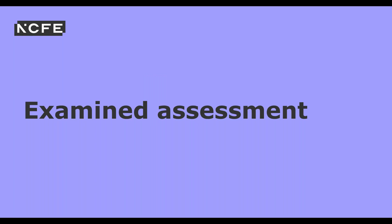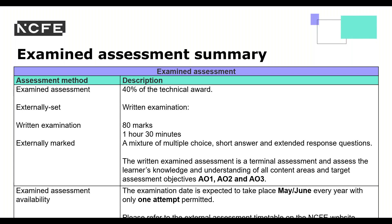There will now be more detail about the exam assessment, including the sample assessment materials that are also available. The EA is 40% of the technical award for graphic design. It is a written examination externally set by NCFE. Learners have 1 hour and 30 minutes to complete it and it is graded out of 80 marks. There is a mixture of multiple choice, short answer and extended response questions. It targets assessment objectives AO1, AO2 and AO3. The examination date is May to June every year and there is only one attempt at the exam, with booking upon registration.